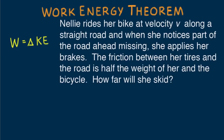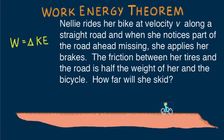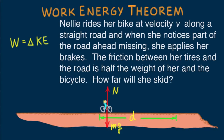Nellie rides her bike at velocity v along a straight road and when she notices part of the road ahead is missing, she applies her brakes. The friction between her tires and the road is half the weight of her and the bicycle. How far will she skid? To start, draw a vector diagram. We see there's a weight vector, a normal vector when a surface is involved, and a horizontal friction vector pointing against the direction of motion. Friction slows the bike, so we have three forces acting on Nellie.